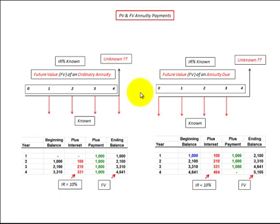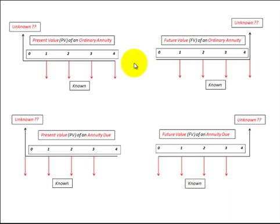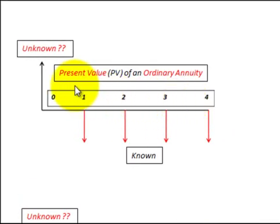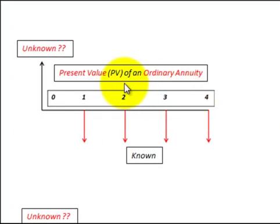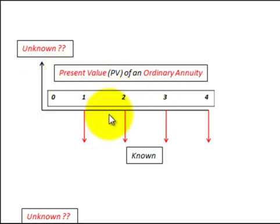You can do the same type of calculations for the present value of annuity dues, discounting payments backwards to determine their present value for both ordinary annuities and annuity dues. Let's summarize the cash flow diagrams for each annuity type. For the present value of an ordinary annuity, you'd use the PV function in your calculator. Equal payments are at the end of each period, discounted back to determine their present value — requiring the interest rate, payment amount, and number of payments.